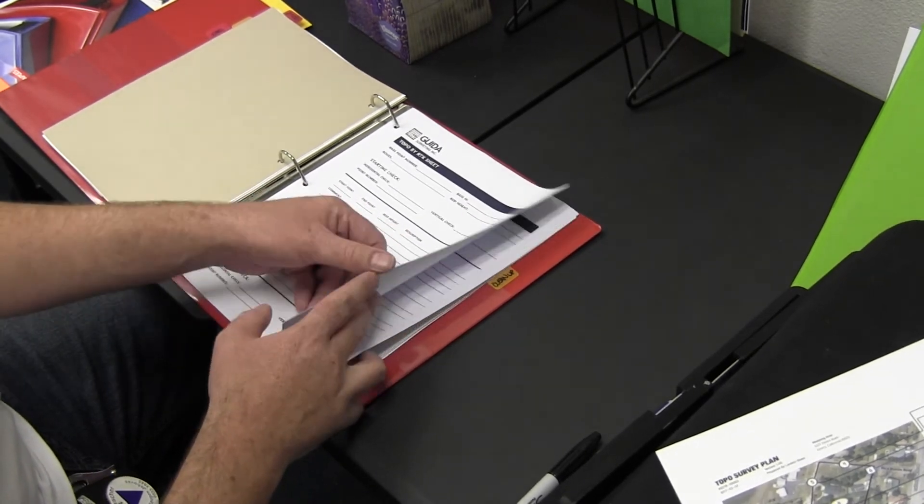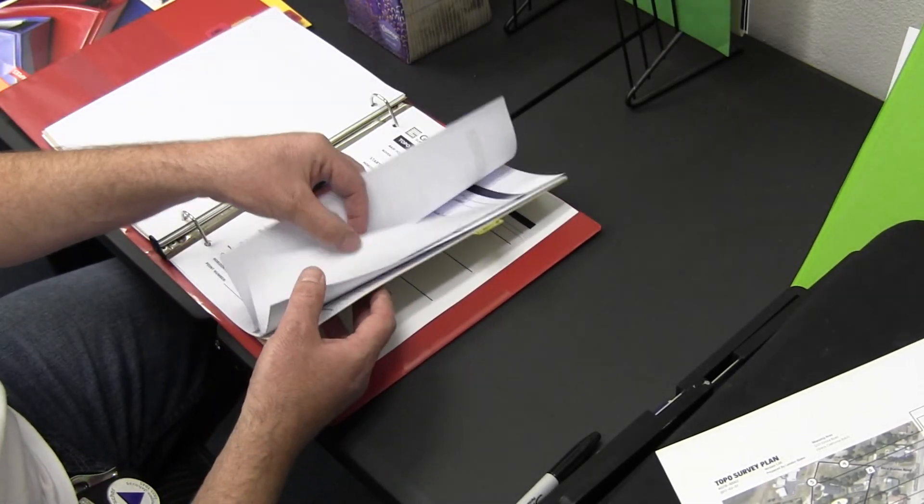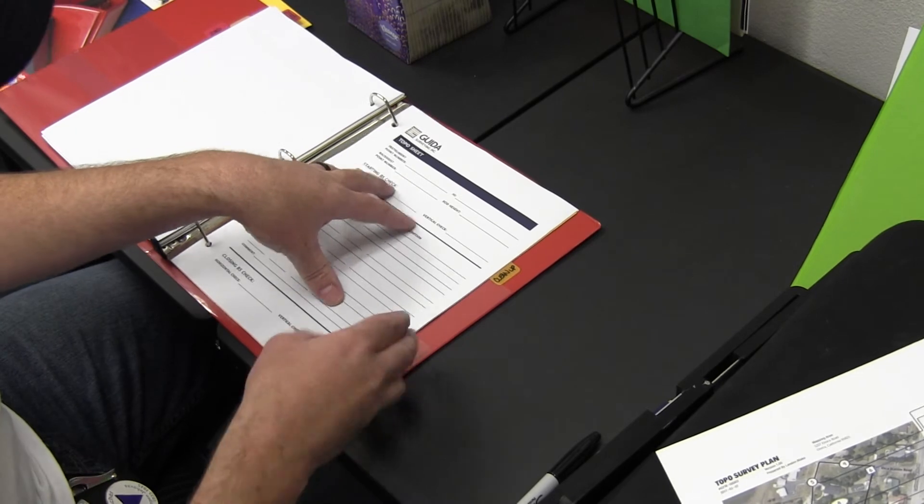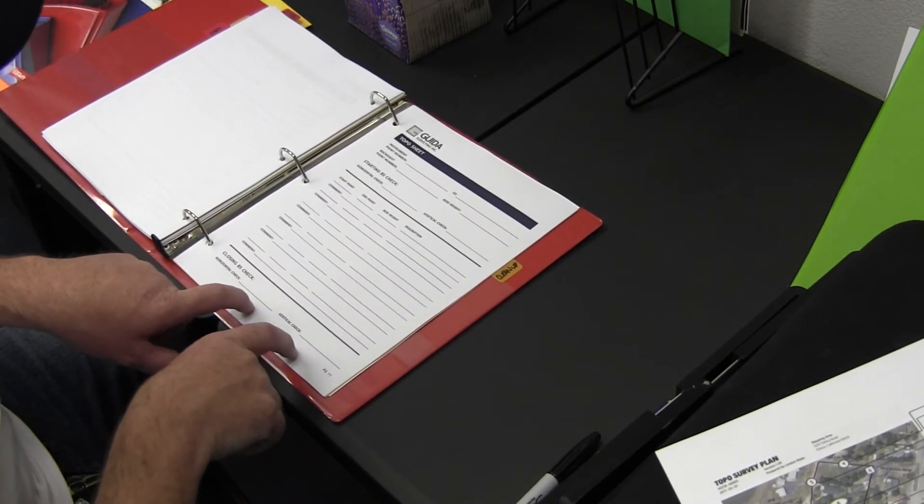We have some for RTK, and then we also have some for total station. Similar setup, a little bit different. On these, we include their horizontal and vertical checks, their backside checks, starting and ending.